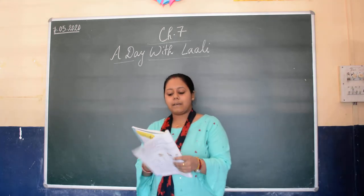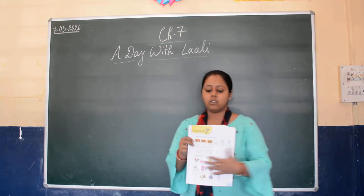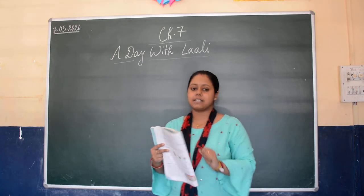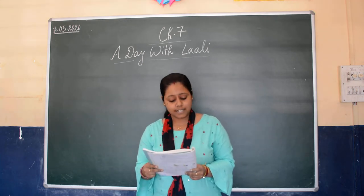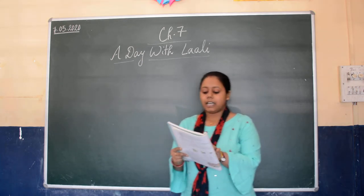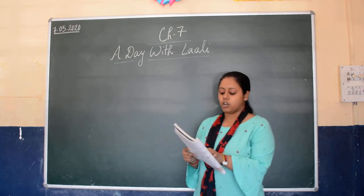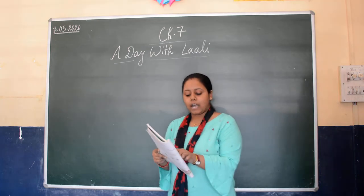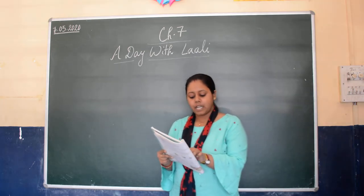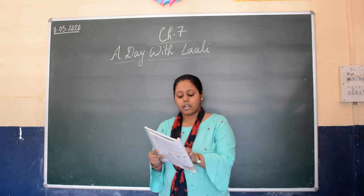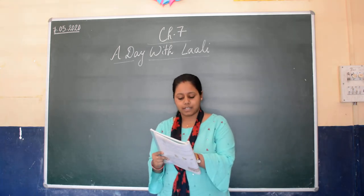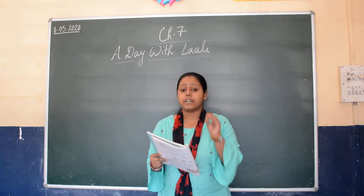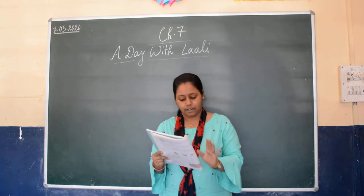Children, there are pictures given. Six pictures and some sentences are also given. What are the sentences? There are not enough books on the shelf. Look at the first page. There are not enough books on the shelf — means there are very few books on the shelf.